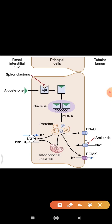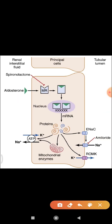This figure shows the mechanism of action of aldosterone. The cell shown here is the principal cell of the renal collecting tubules. Aldosterone enters the cell from the basolateral membrane and binds with the mineralocorticoid receptor, forming an aldosterone-mineralocorticoid receptor complex. This complex enters the nucleus and binds to DNA. mRNA is formed from transcription of DNA and is released into the cytoplasm, where it is translated and proteins are formed.